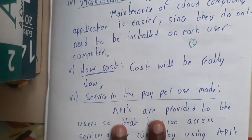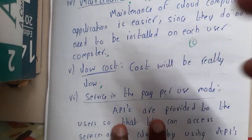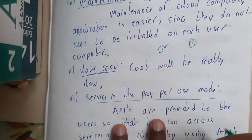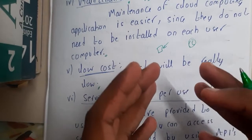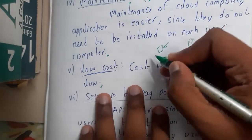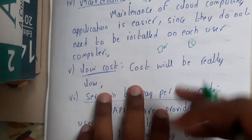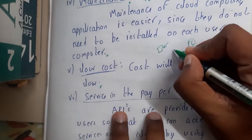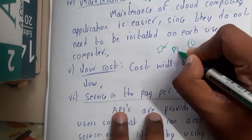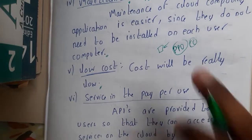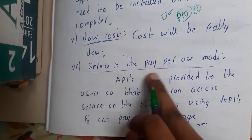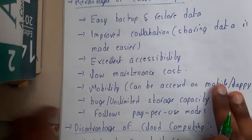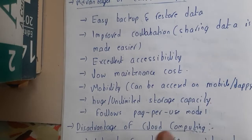Similarly, low cost. If you want to buy a high-end system for only a limited time, buying it outright is not a good idea — renting it is better. Cloud computing follows a pay-per-use model: you pay for as much as you use. Services in the pay-per-use model — that is the low-cost advantage of cloud computing.